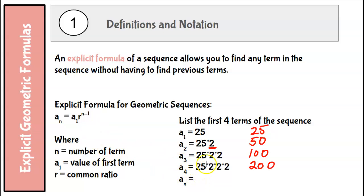So that's where this comes from. The first term of 25 and then the common ratio, which in this case was 2, and then I have one less. So this was like 2 to the third power here. And this is 2 squared. The exponent is one less than the term number. That's where the n minus 1 comes in.